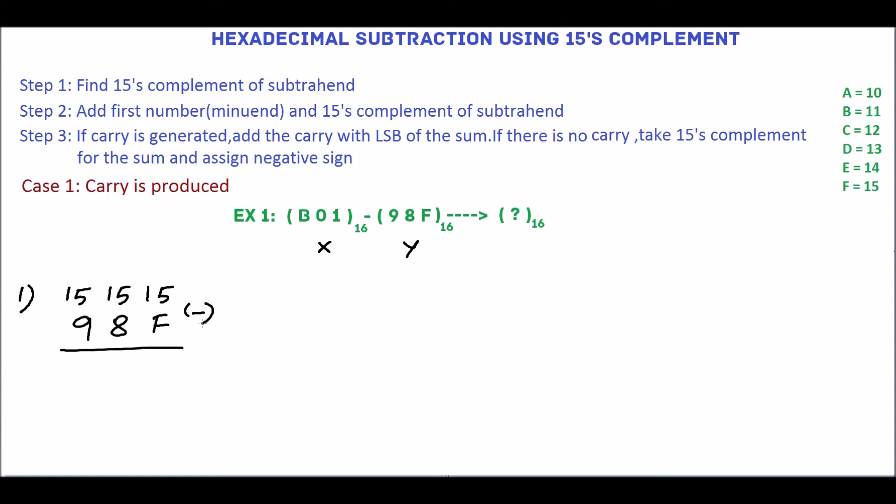F is equivalent of 15. 15 minus 15 is 0. 15 minus 8 is 7. 15 minus 9 is 6. 6-7-0 is the 15's complement.